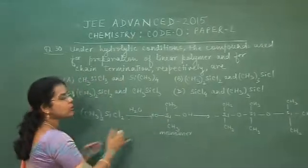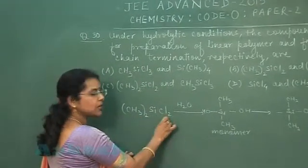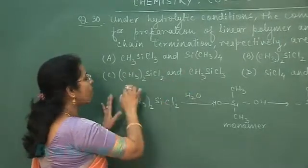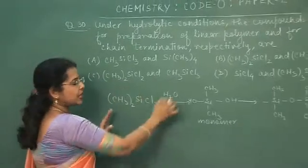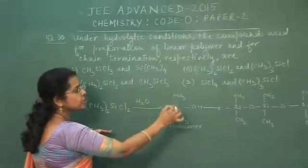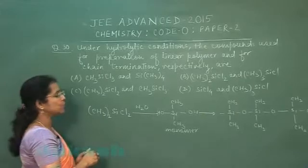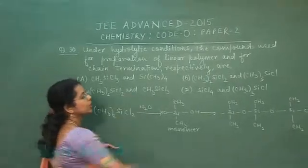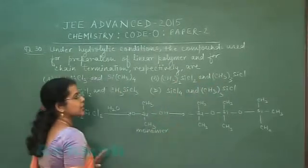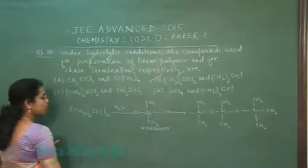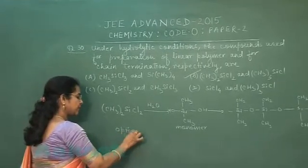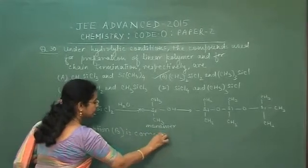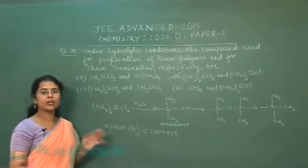To select the two compounds: the starting material for the reaction should have 2 chlorines. The options with 2 chlorines are B and C. For chain termination, 3 alkyl groups should be present in the compound — that is (CH₃)₃SiOH. So only option B is correct. All other options are incorrect.